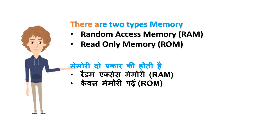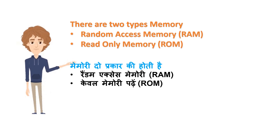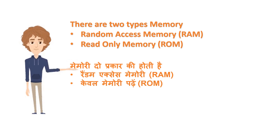There are two types of primary memory: Random Access Memory (RAM) and Read Only Memory (ROM). Memory doh prakaar ki hoti hai: Random Access Memory (RAM) aur Kewal Padhen Memory (ROM).